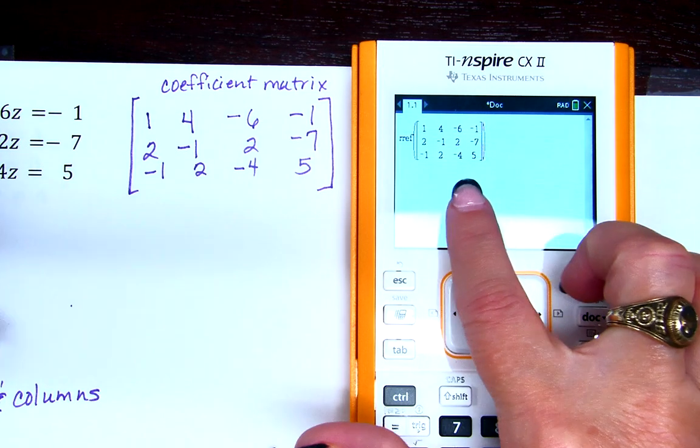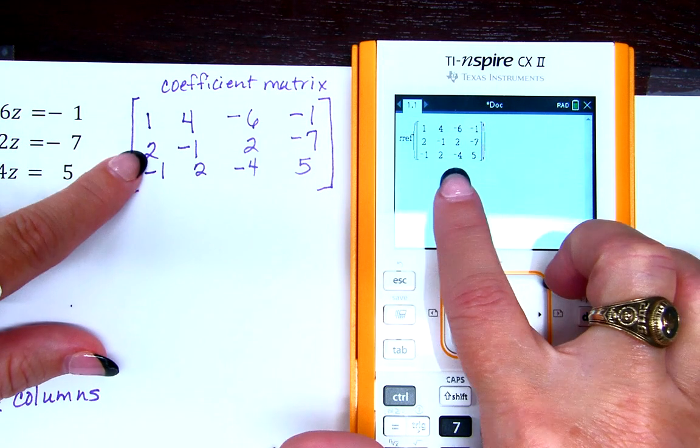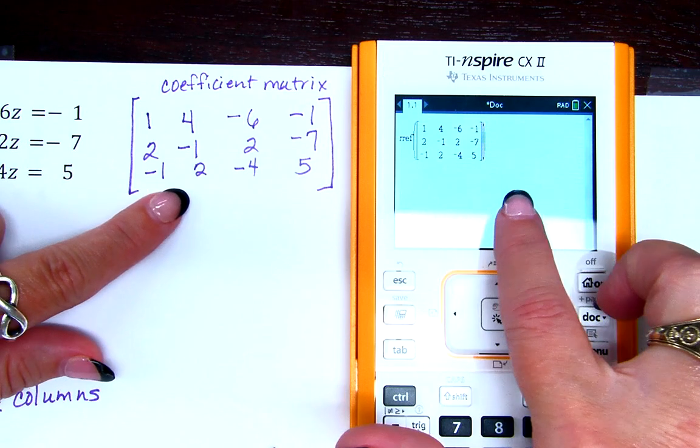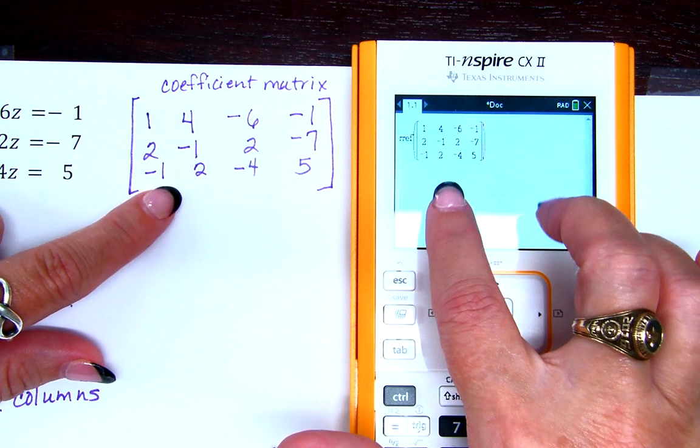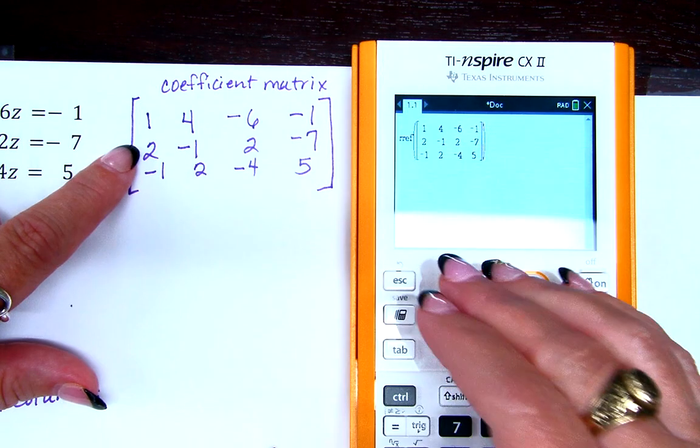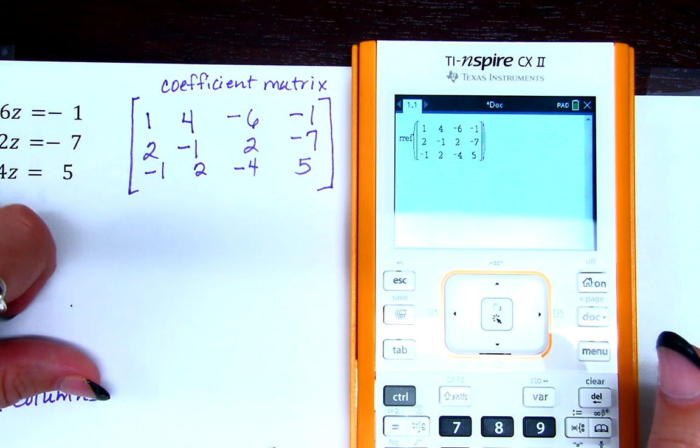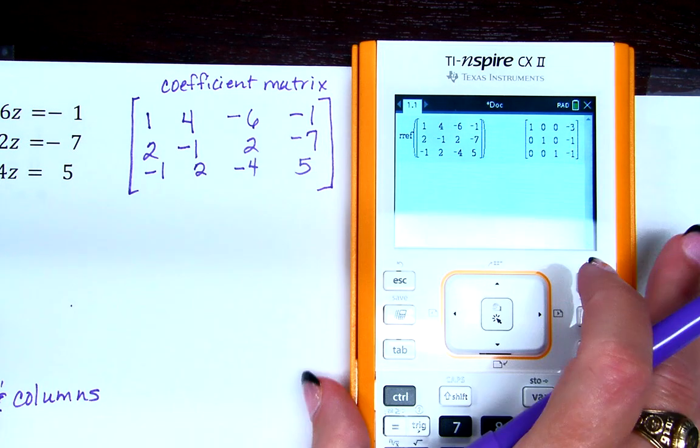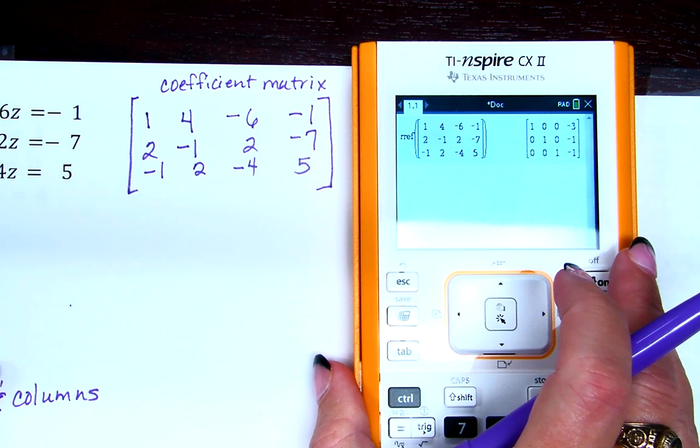Now, before I press enter, I'm going to take just a couple seconds and make sure what I entered was actually what I wrote down on my paper. It's a lot easier to take a couple seconds now to check than to hit enter, realize it's wrong, have to go back and enter it all again. Now, when I enter it, what it gave me was another matrix as an answer, right? So I'm going to copy down that matrix.